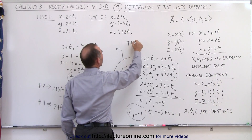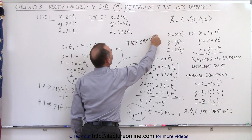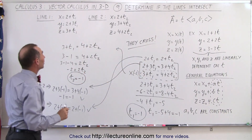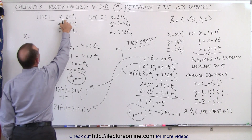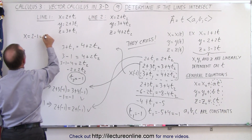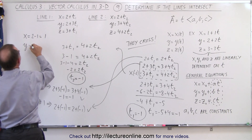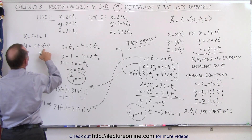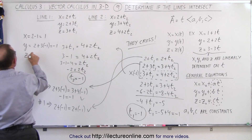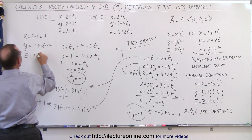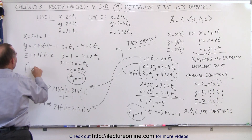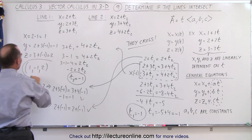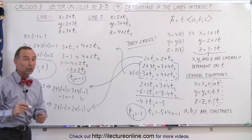They cross. Now let's find where. The values for x, y, and z can be found by plugging in t1 equals negative 1: x equals 2 minus 1, which equals 1. Y equals 2 plus 3 times negative 1, so 2 minus 3, which is negative 1. And z equals 3 plus negative 1, which equals 2. That means the two lines cross at the point (1, −1, 2).